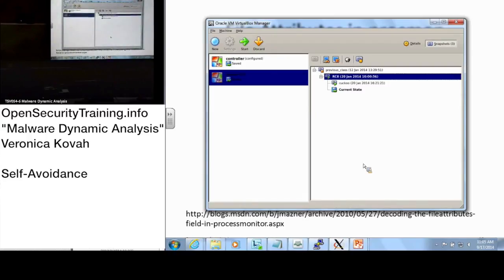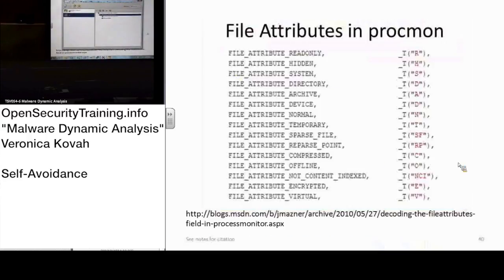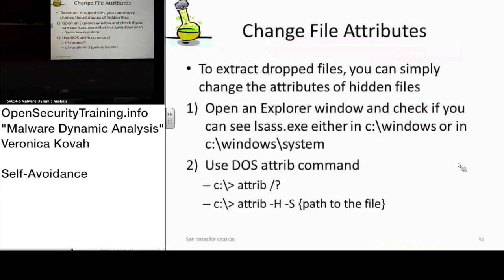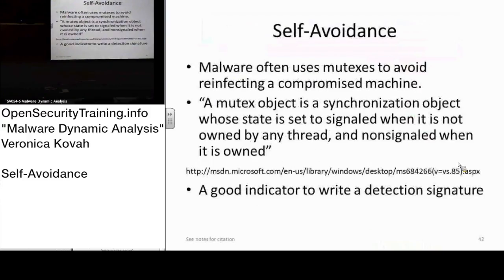So, self-avoidance — I'll skip the lab but want to mention it briefly since we have more important content to cover. Self-avoidance: once an attacker compromises a machine, it does not want to keep reinfecting it because that may disturb its own operation. So often what malware does is it sets a kind of mutex — a system-wide value.